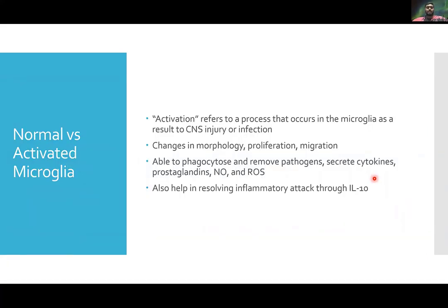So what is the difference between normal and activated microglial cells? Activation refers to a process that occurs in microglia as a result of CNS injury or infection. Similar to astrocytes, they show changes in morphology, increased proliferation, and migration to sites of insult. One of the main things they're able to do is phagocytose and remove pathogens, secrete cytokines and prostaglandins, secrete nitric oxide for vasodilation, and create reactive oxygen species to kill off invaders.